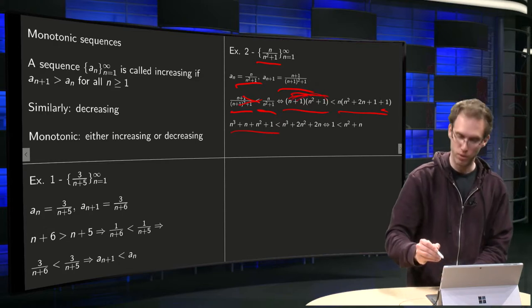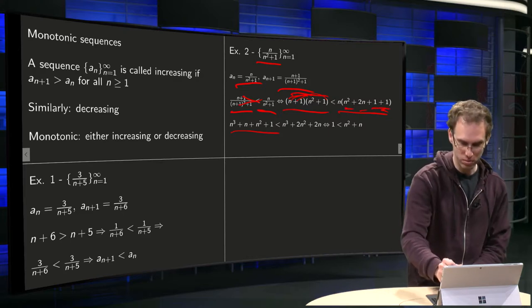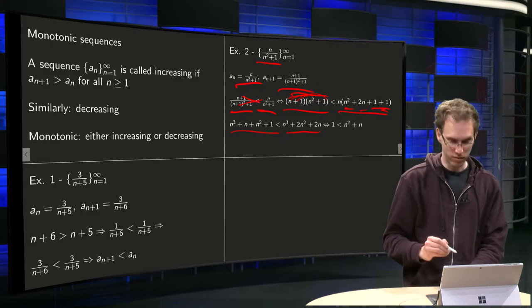You get n³ + n + n² + 1, so all those terms. And work out the brackets here, we get n³ + 2n² + 2n, you get the terms over there. And that's equivalent to...